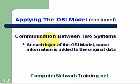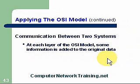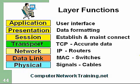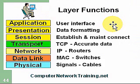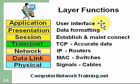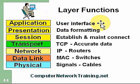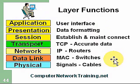Applying the OSI model continued — communication between two systems or two computers. At each layer of the OSI model, some information is added to the original data. We have our layers from the application to the physical, and here we're showing the layer functions. The first is our user interface at the application layer. This is where we put data in a format the user can use, or the user might be generating files to be sent out. Depending on which direction the information is going — down through the layers means the user is driving it; coming up through the layers means the user is receiving it.